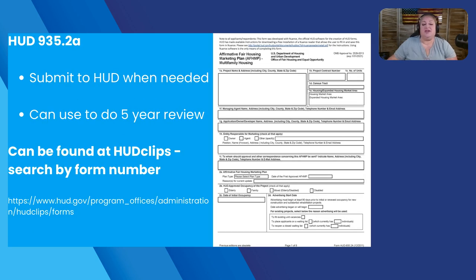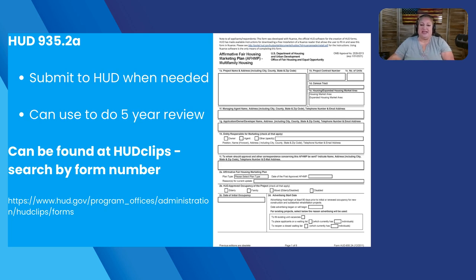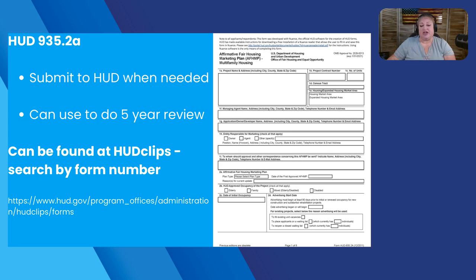This is the 935.2A form — your actual marketing form. You can find it on HUD CLIPS; just do a search for the form number. This is the form you'll complete and submit to HUD when you need a full marketing plan. You also have to attach a number of things, and you can use it to do a five-year update listing any information that you found.